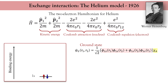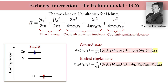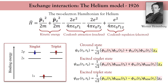Now let's look at the excited state. Such a state is composed of one electron in the ground state 1s and one electron in either 2s or 2p states. I have two possibilities: either the excited spin is anti-parallel to the spin of the ground state, forming a singlet state with symmetric orbital contribution, or it is parallel to the spin of the ground state, forming a triplet state with anti-symmetric orbital contribution.